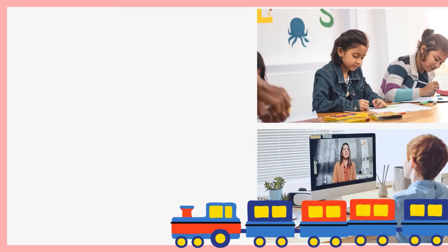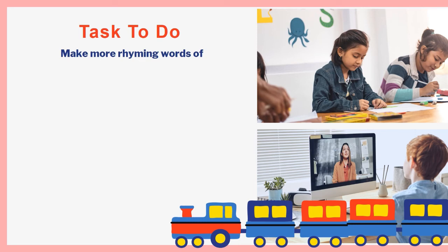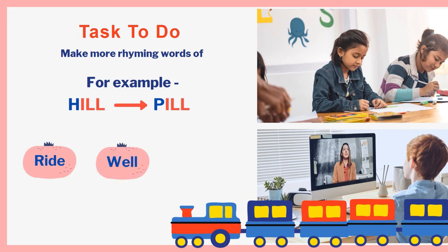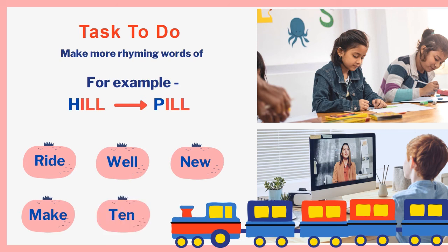Children, I have some tasks for you. Make more rhyming words of the given words. To make a new rhyming word of hill, we will take the last two or three letters and add a new letter to make a meaningful word — like we have made hill to pill. Other words are ride, well, new, make, and ten. So you will make rhyming words of these words.